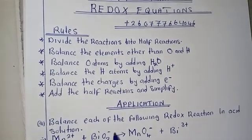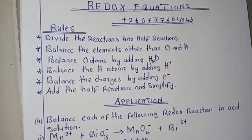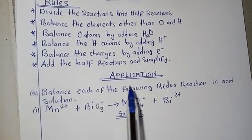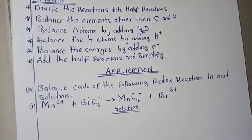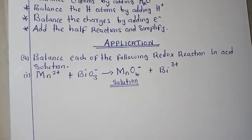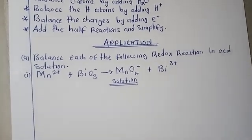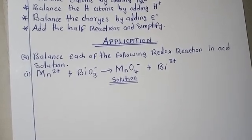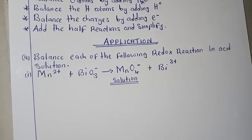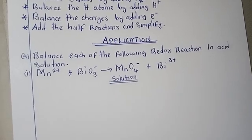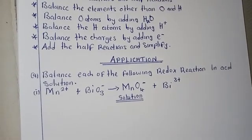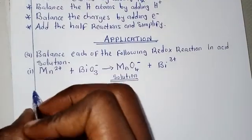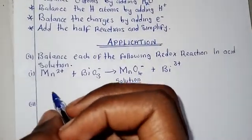Without wasting much time, I'm going to use these rules on the question we'll be doing so you can see how they make sense. We have an application: balance each of the following redox reactions in acid solution. We have this equation here — manganese(II) and a trioxide, which when they react produce manganese(IV) oxide. The first thing to do is to divide the reactions into half reactions.